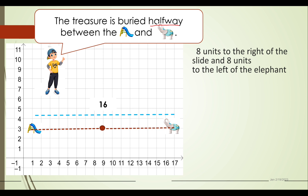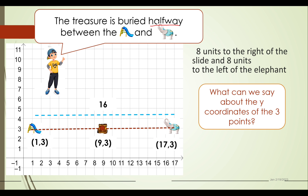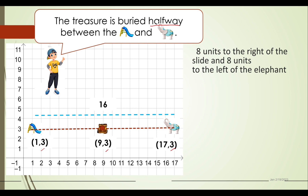The location of the treasure has been found. Looking at the coordinates: the slide is at (1, 3), the elephant is at (17, 3), and the location of the treasure is at (9, 3). What can we say about the y-coordinates of the three points? We have 3, 3, and 3 — all y-coordinates are equal. But what about the x-coordinates?